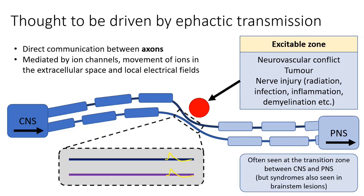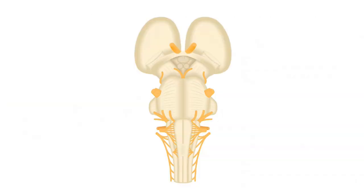We see this more commonly in the transition between the central nervous system and the peripheral nervous system. Going from oligodendrocyte to Schwann cell myelination seems to make it more likely that this is going to happen.